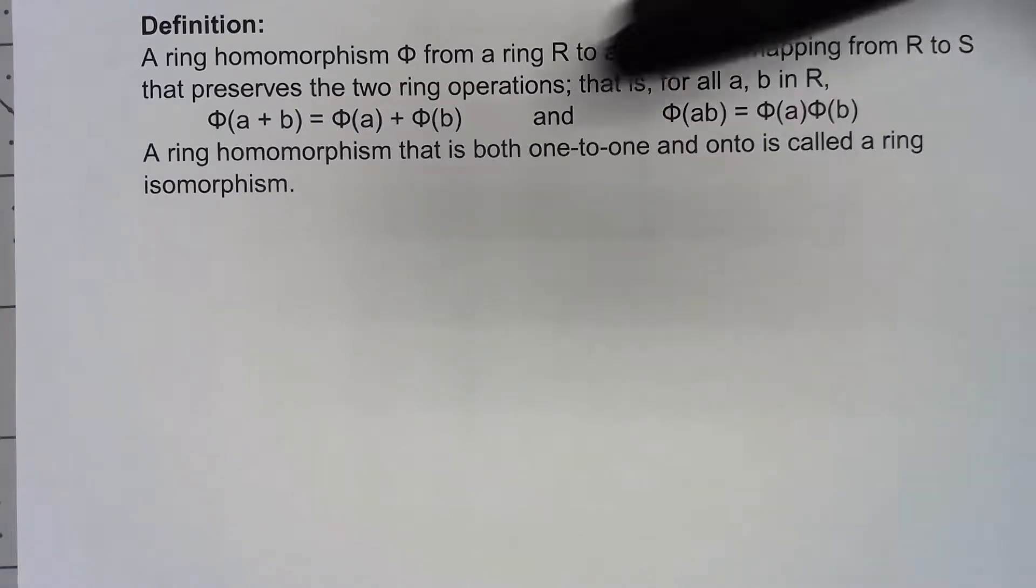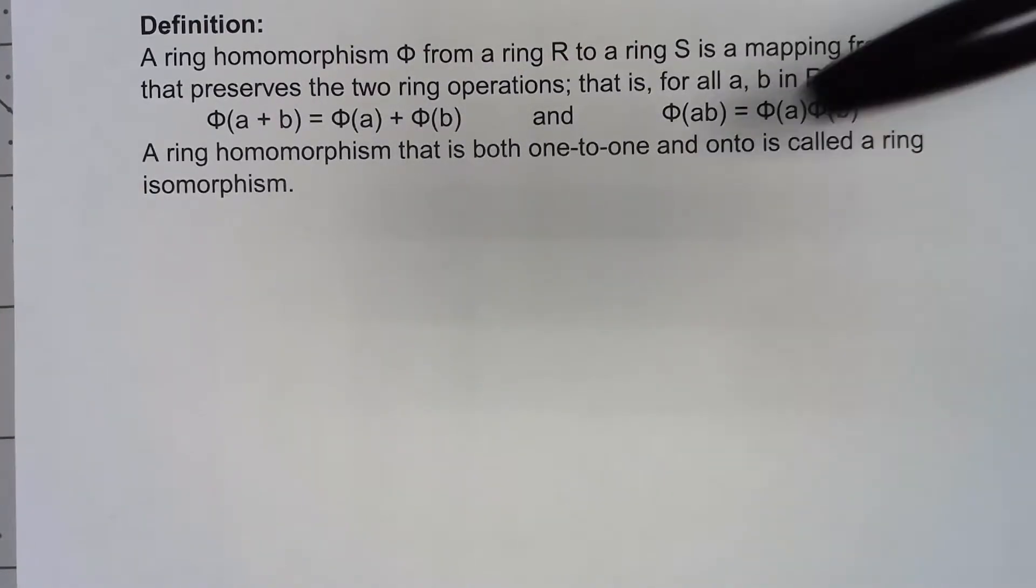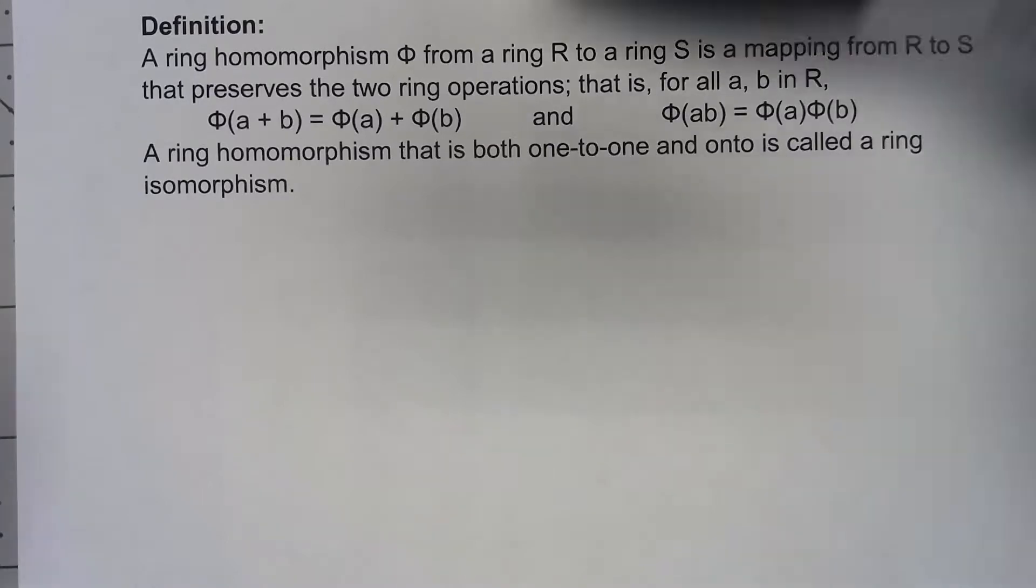And also, if we have a homomorphism that's both one-to-one and onto, it's actually going to be an isomorphism. Let's take a look at a couple of examples.